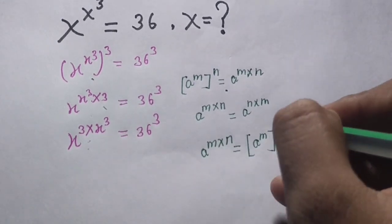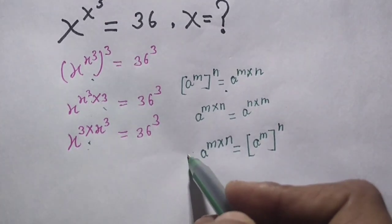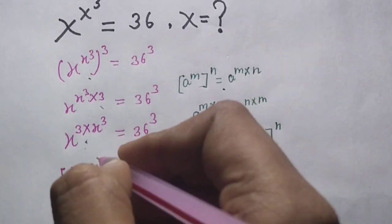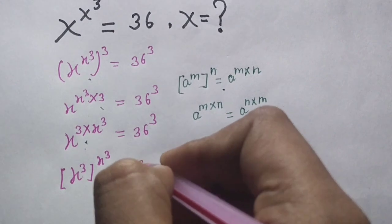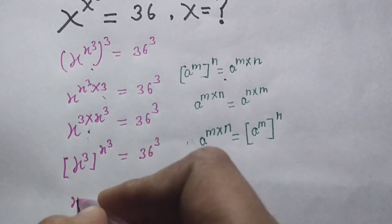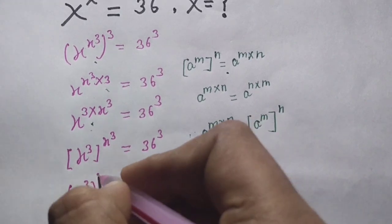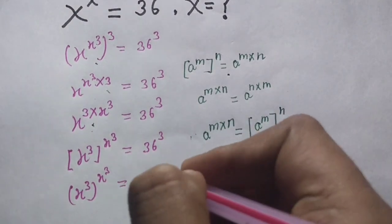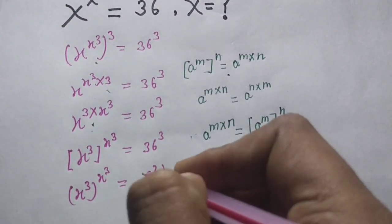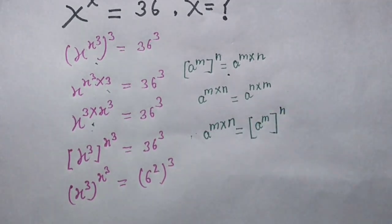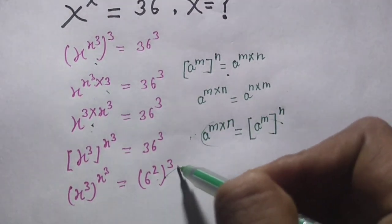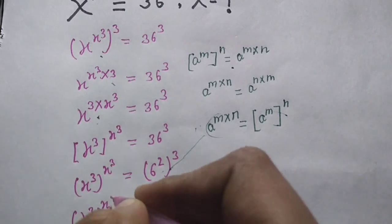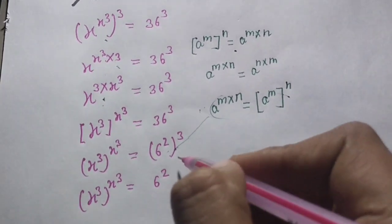Using this identity, x cubed, x squared cubed equals 36, and x cube power x cube equals 36. I can write 36 as 6 power 2, whole power 3. Using this identity gives us 6 times 2 times 3.